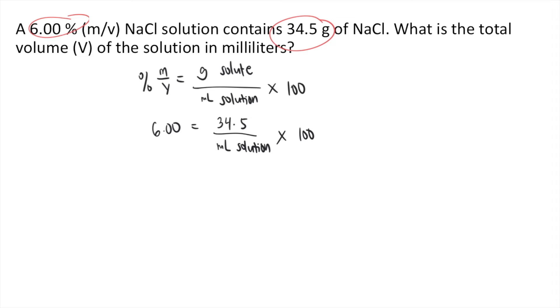So first, what you're going to do is divide both sides of the equation by 100. So 100 cancels on the right side. So on the right side, you have 34.5 divided by mL of solution. On the left side, you have 6 divided by 100. That is 0.06.